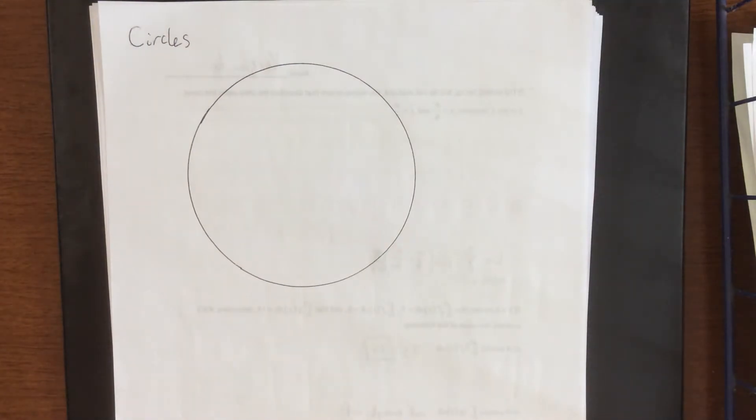Now that turned out pretty well. When it comes to circles, circles are really easy to identify because they are things that are what we would probably consider perfectly round.